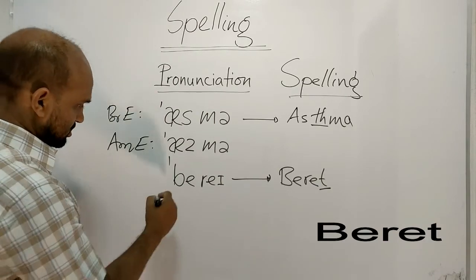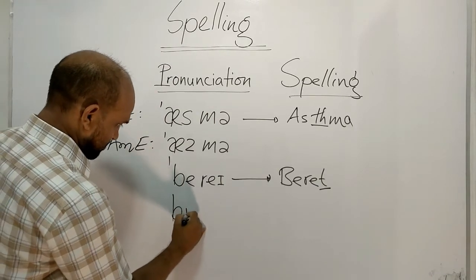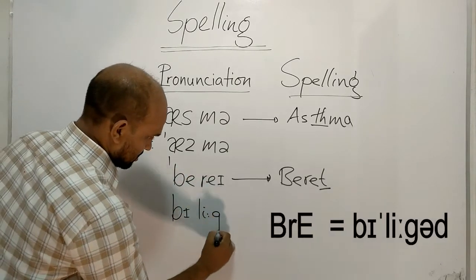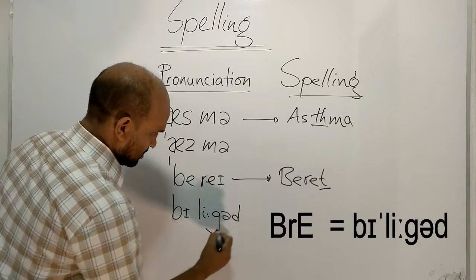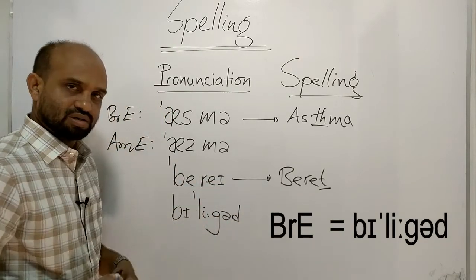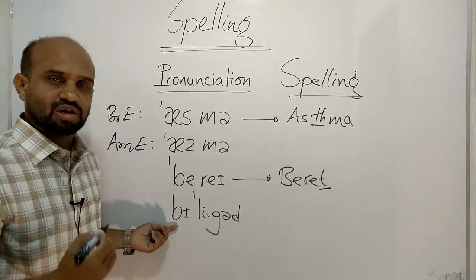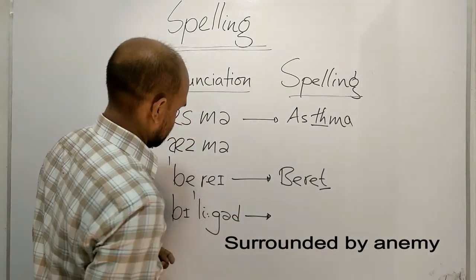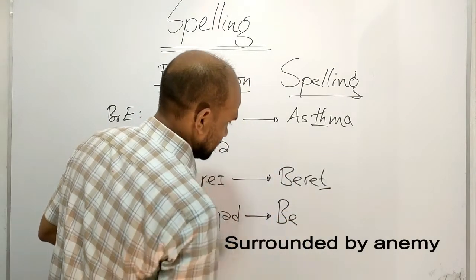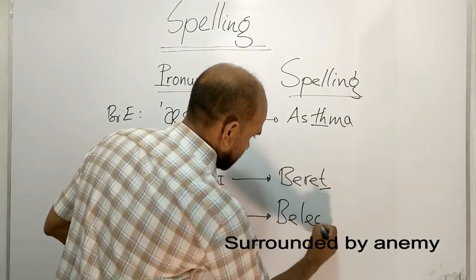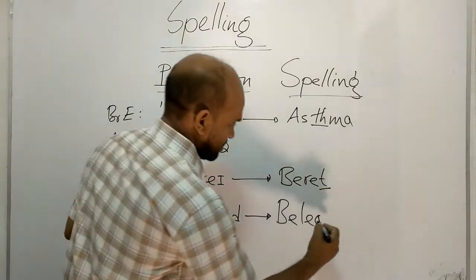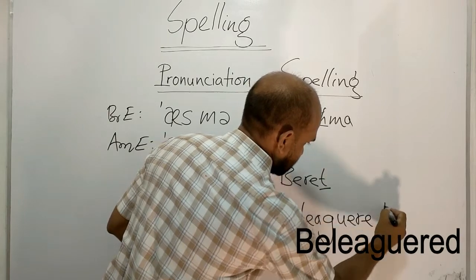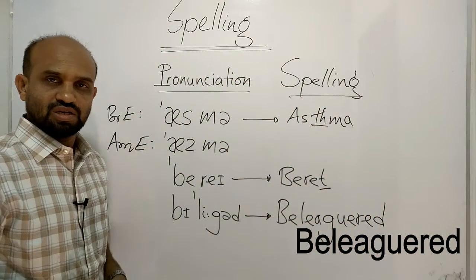Next word is beleaguered. The meaning is surrounded by enemy. Spelling is B-E-L-E-A-G-U-E-R-E-D, beleaguered.